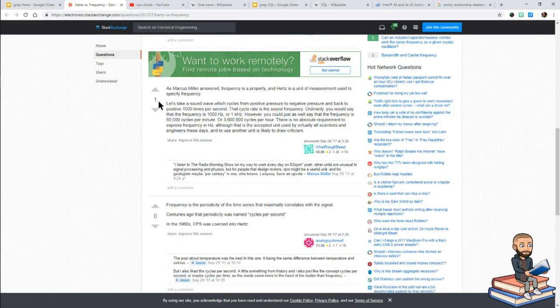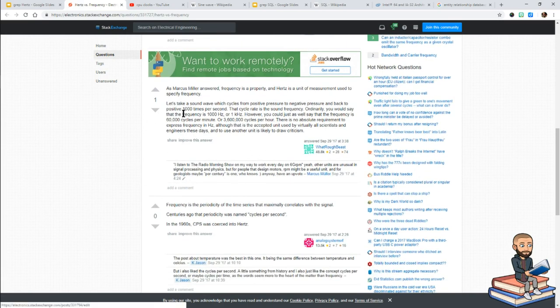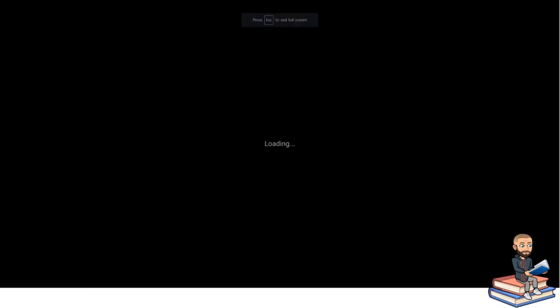I wish this answer was actually upvoted more, but some of these websites, you know. You're not always going to find the most polite people online, but at least you have a whole world of knowledge at your fingertips. This person says, let's take a sound wave which cycles from positive pressure to negative pressure and back. That cycle rate is the sound frequency. Ordinarily, you would say that the frequency is 1,000 hertz, or 1 kilohertz. However, you could just as well say that frequency is 60,000 cycles per minute, or 3.6 million cycles per hour. There's no absolute requirement to express frequency in hertz, although that is the accepted unit used by virtually all scientists and engineers these days. So in that answer, you also get to see what type of community hertz is going to be used in.